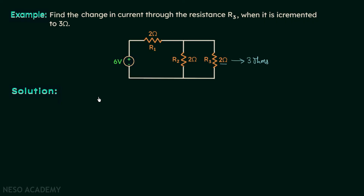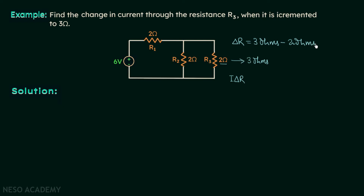As discussed in the compensation theorem, to find the change in current we will introduce one voltage source with value I·delta R in series with the new R3 of 3 ohms, while turning off the 6-volt source. We know delta R: delta R is equal to 3 ohms minus 2 ohms, so delta R equals 1 ohm. But we don't yet know the value of current I.